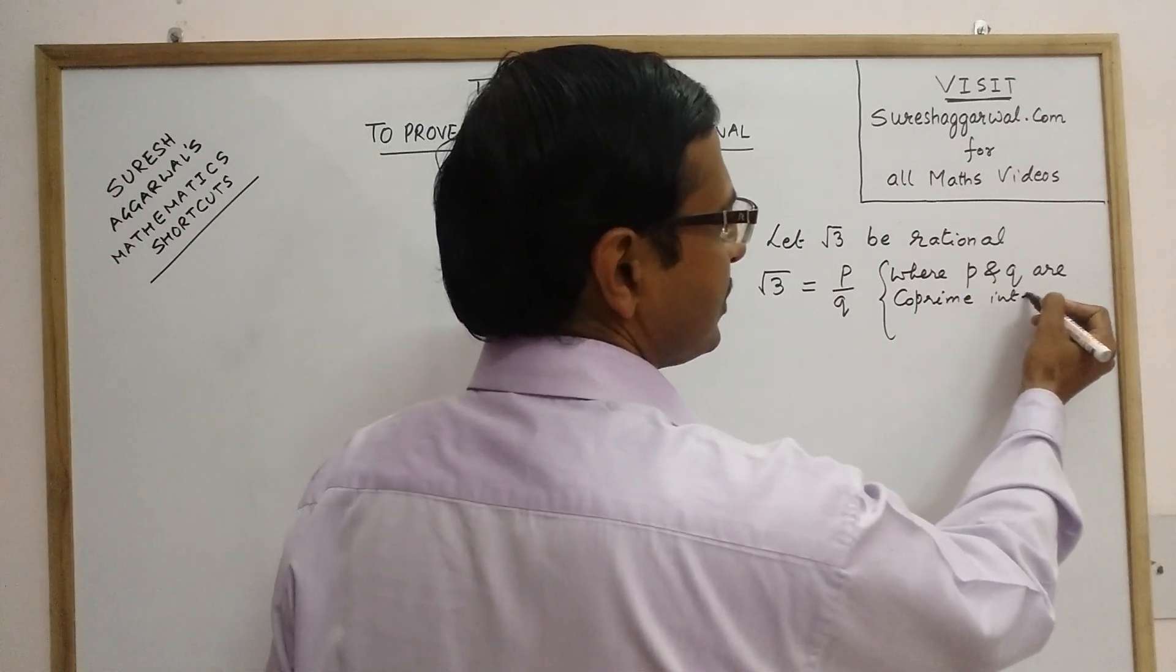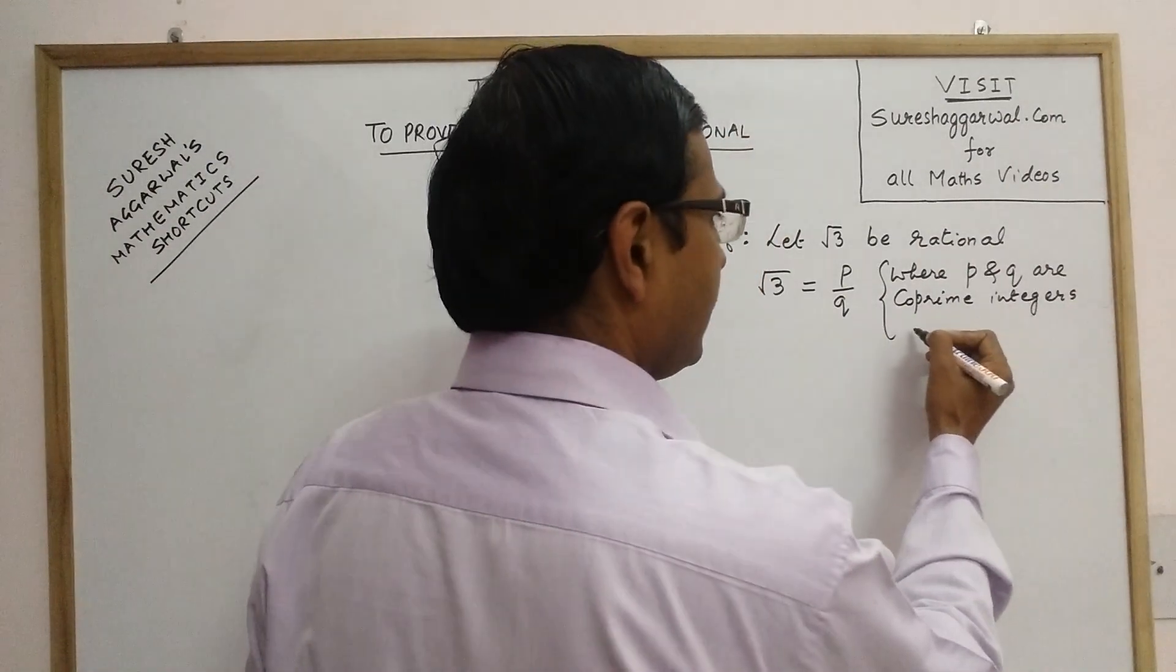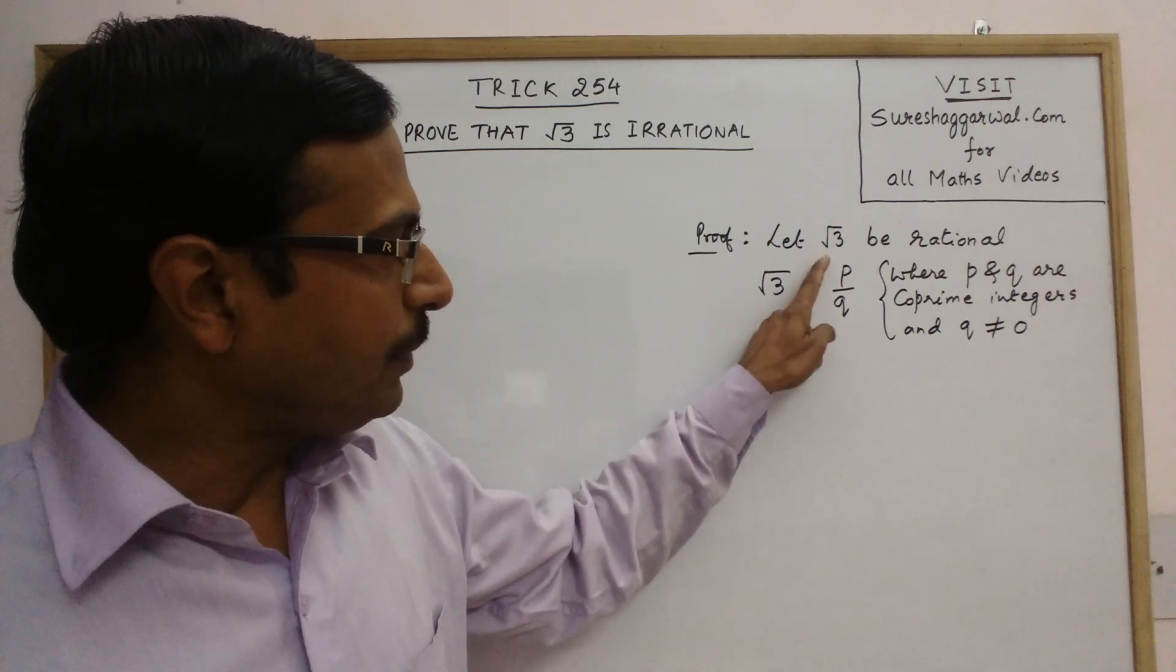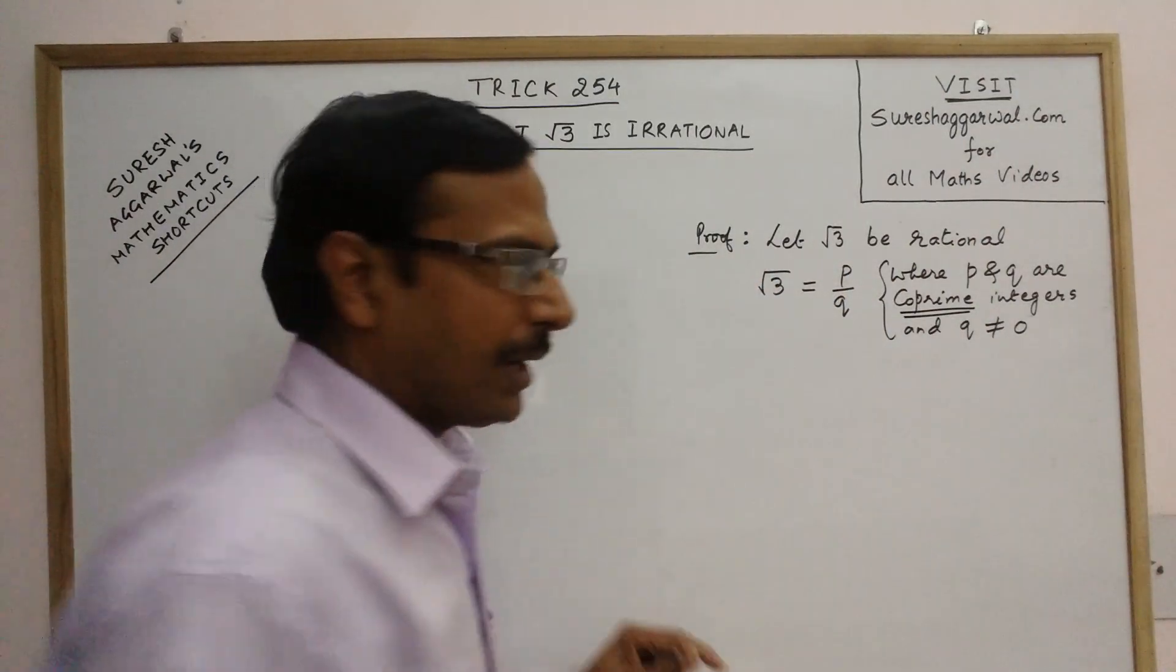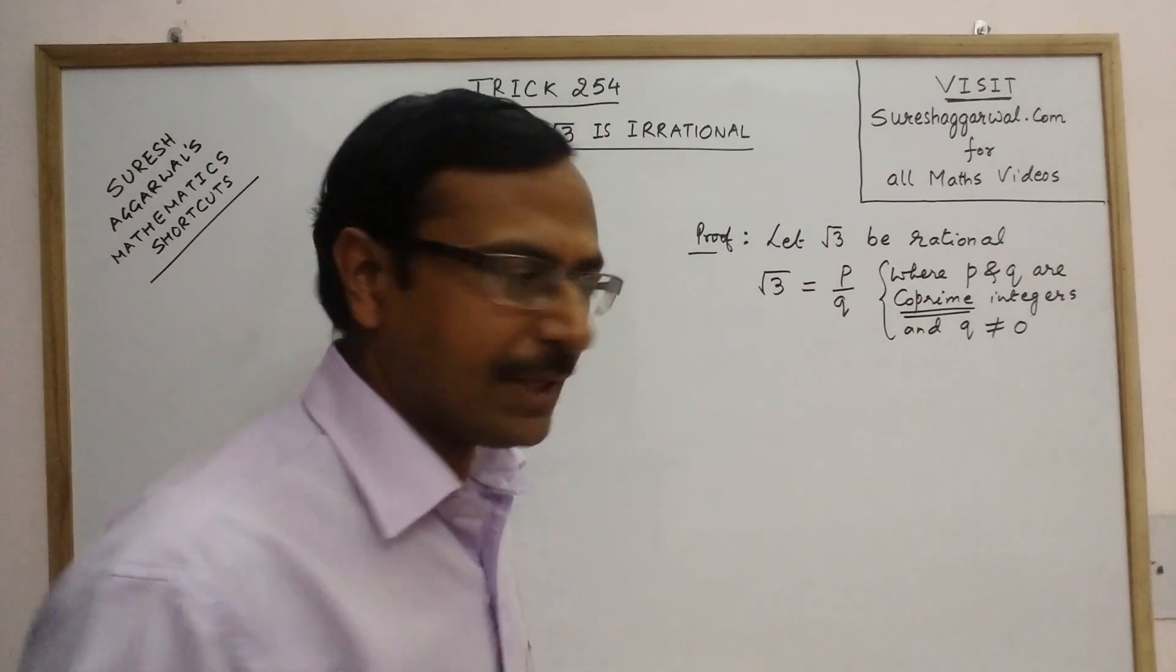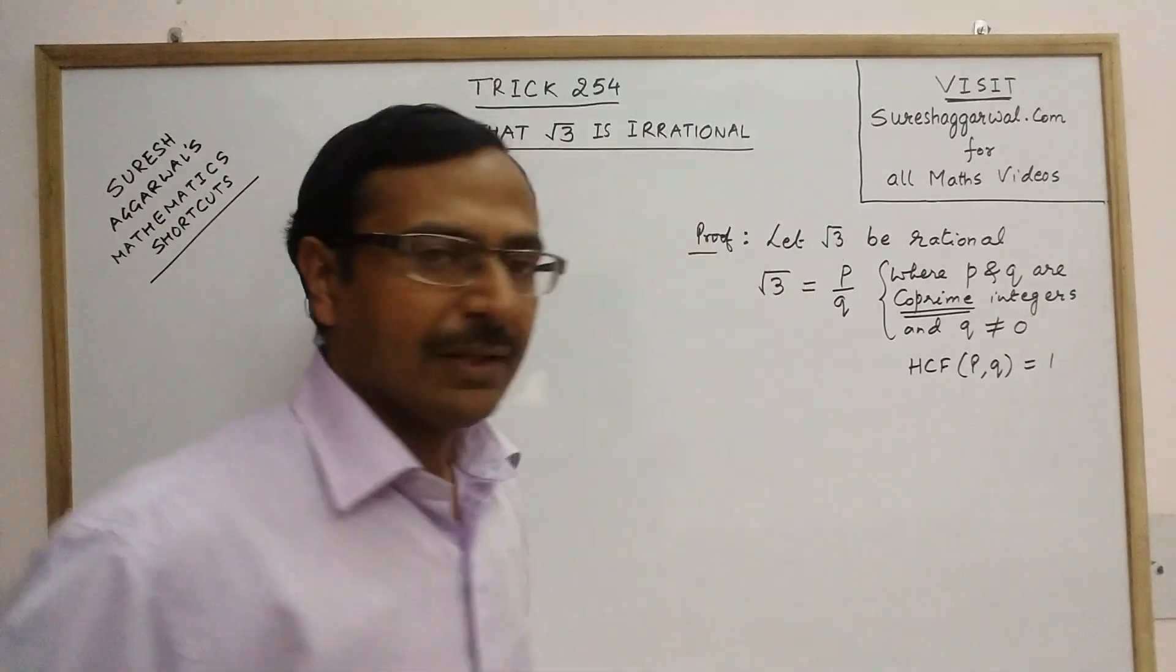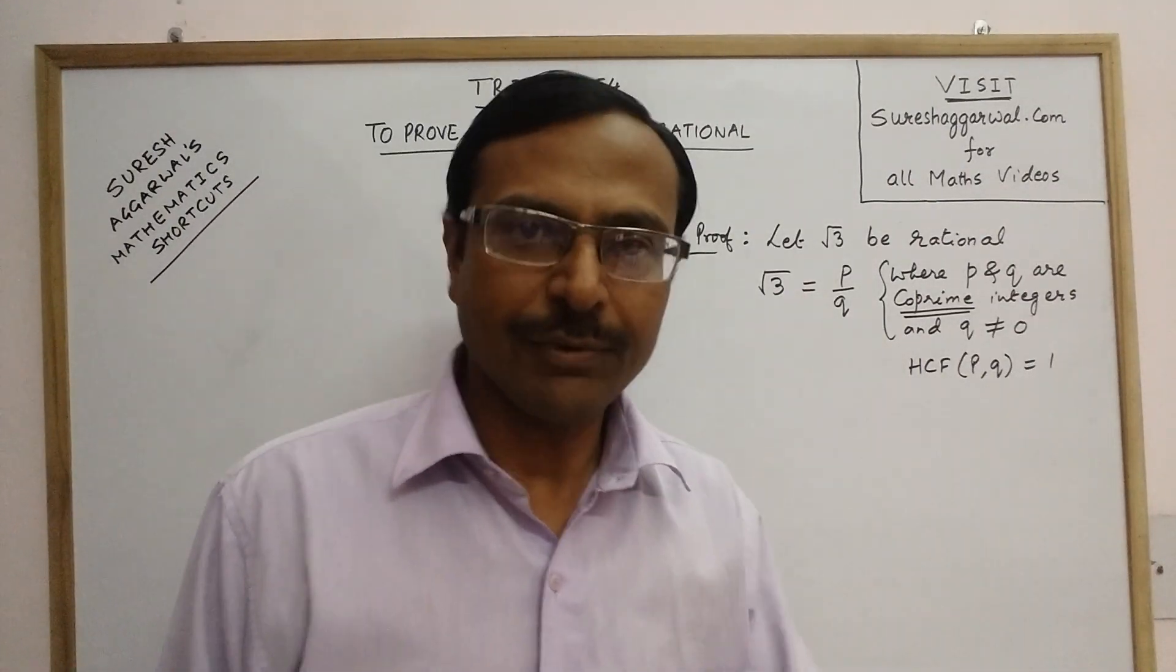Now co-prime integers, I will just tell you what is the meaning of co-prime. And q cannot be equal to 0. Obviously the denominator cannot be 0 and p and q are co-prime. The condition of two numbers being co-prime is that they do not have any common factor between them. So if p and q are co-prime, then the highest common factor of p and q is always 1. That means there is no common factor between p and q other than 1. Obviously 1 is a factor of every number.